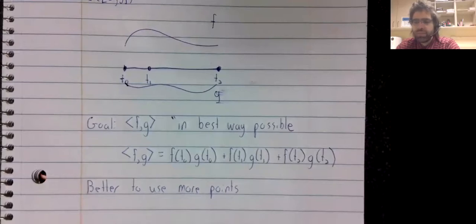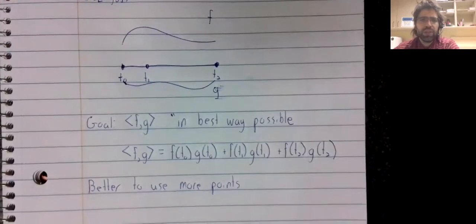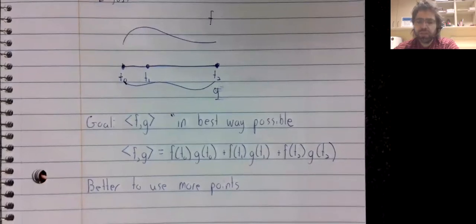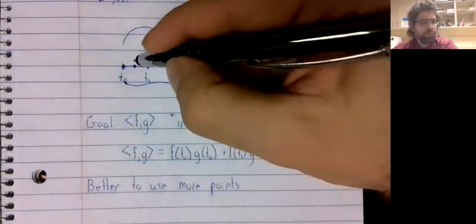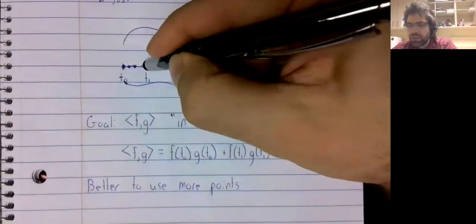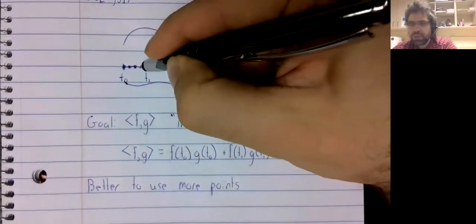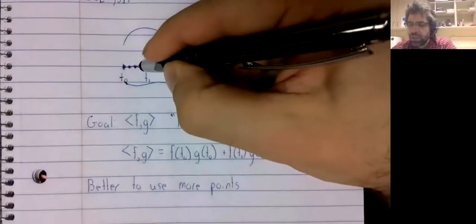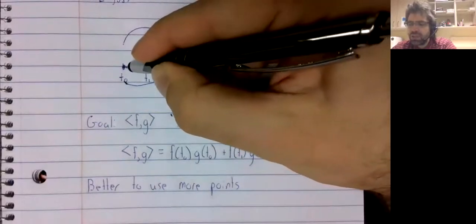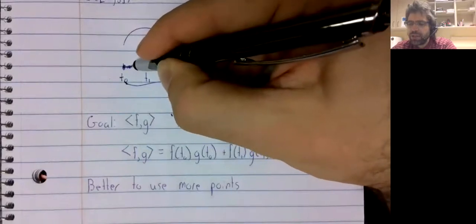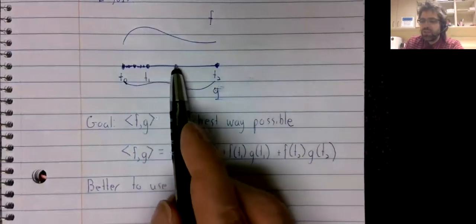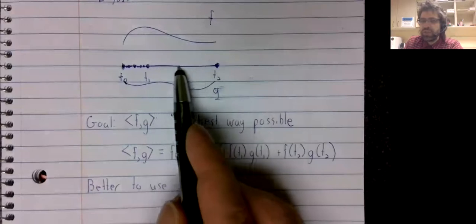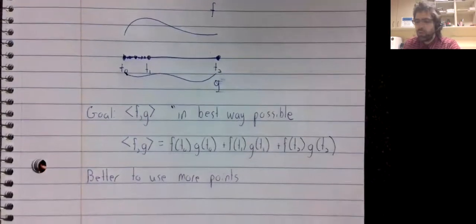However, even if we use more points, we might end up ignoring quite a lot of the function. We could add a point here, and we could add a point here, and we could add points here and here. We're adding all these points, but there's still this large region that we are completely ignoring.